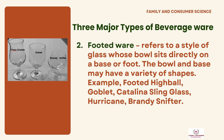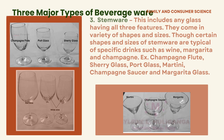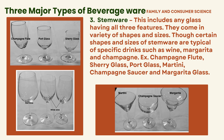Footedware refers to a style of glass whose bowl sits directly on a base or foot. The bowl and base may have a variety of shapes; examples include the footed highball, goblet, Catalina, sling glass, hurricane, and brandy snifter. Stemware includes any glass having all three features and comes in a variety of shapes and sizes. Certain shapes are typical of specific drinks such as wine, margarita, and champagne; examples are champagne flute, sherry glass, port glass, martini, champagne saucer, and margarita glass.